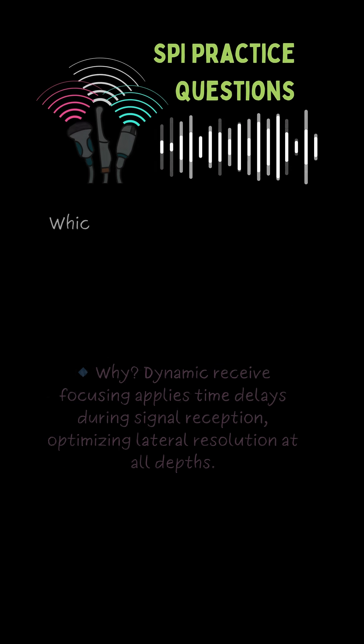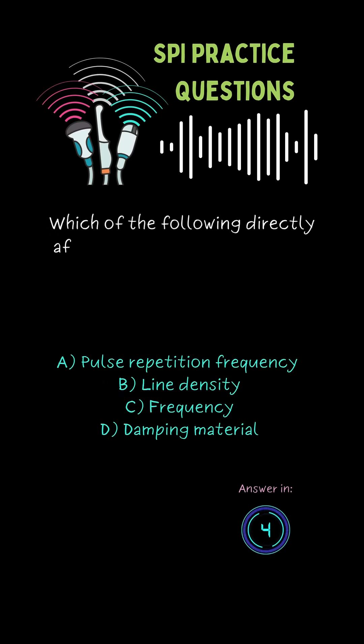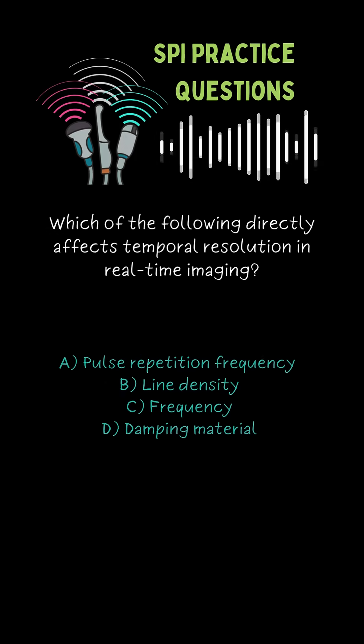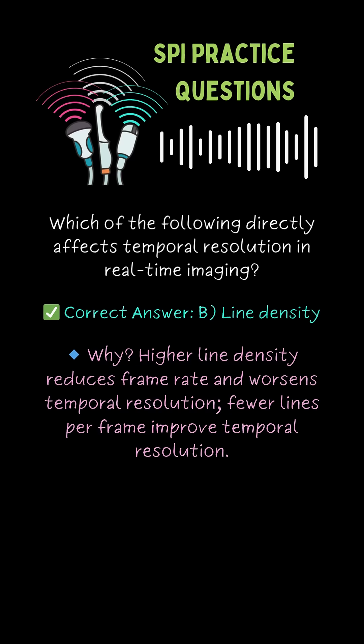Which of the following directly affects temporal resolution in real-time imaging? B. Line density.